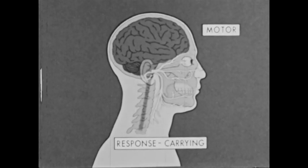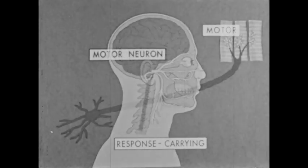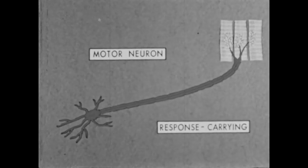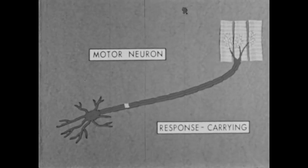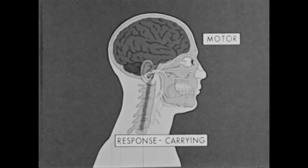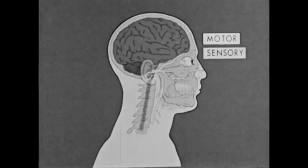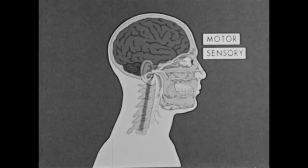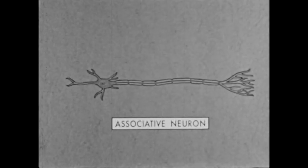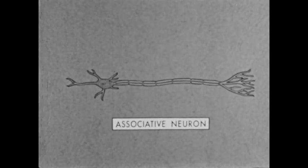Branching out from the spinal cord and brain are other nerves called motor nerves. Motor or response-carrying nerves are made up of motor neurons. The function of motor neurons is to carry response impulses from the spinal cord or brain to the various muscles and organs of the body that carry out responses. Motor and sensory nerves are associated by another kind of neuron found in the brain and spinal cord — these neurons are called associative neurons.